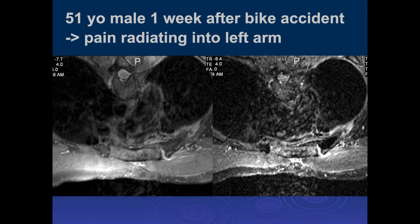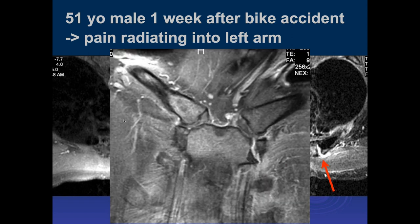This is a 51-year-old male, one week after a bike accident with pain radiating to the left arm. We're looking at the sternoclavicular joint. There's separation, some fluid, and a little bit of edema surrounding it — it looks like a significant injury. It's definitely separated.